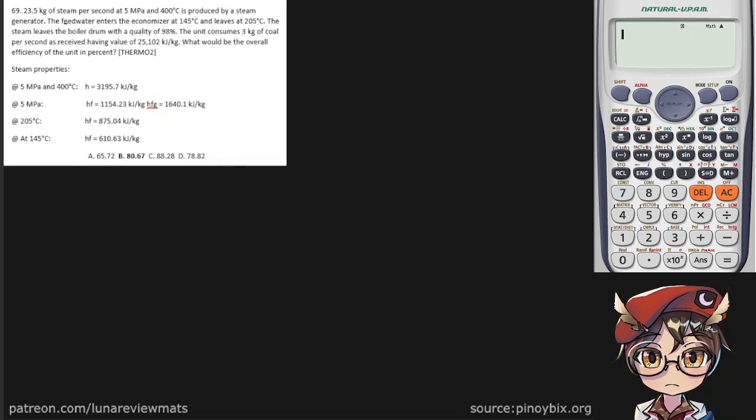23.5 kg of steam per second at 5 MPa and 400°C is produced by a steam generator. So we're dealing with a thermal tube problem. And it looks like 23.5 here is our mass flow rate in kg per second.